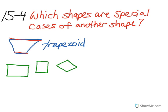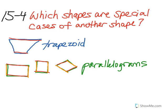You might have also drawn a rectangle, a square, or a rhombus. All these shapes have two sets or two pairs of parallel sides. What can we call the three of these shapes? These are all parallelograms.